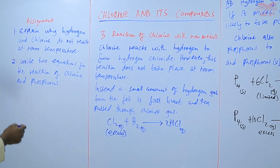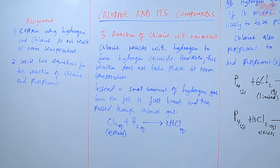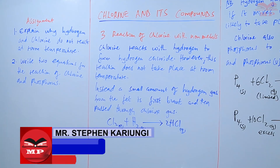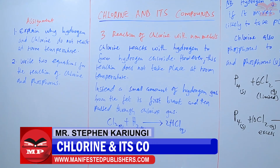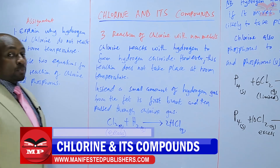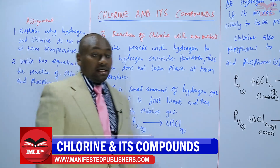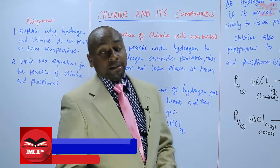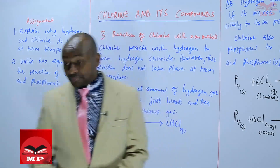So the first question in the assignment: explain why hydrogen and chlorine do not react at room temperature. And number two: write two equations for the reaction of chlorine and phosphorus. So we are going to stop there until next time. Goodbye.